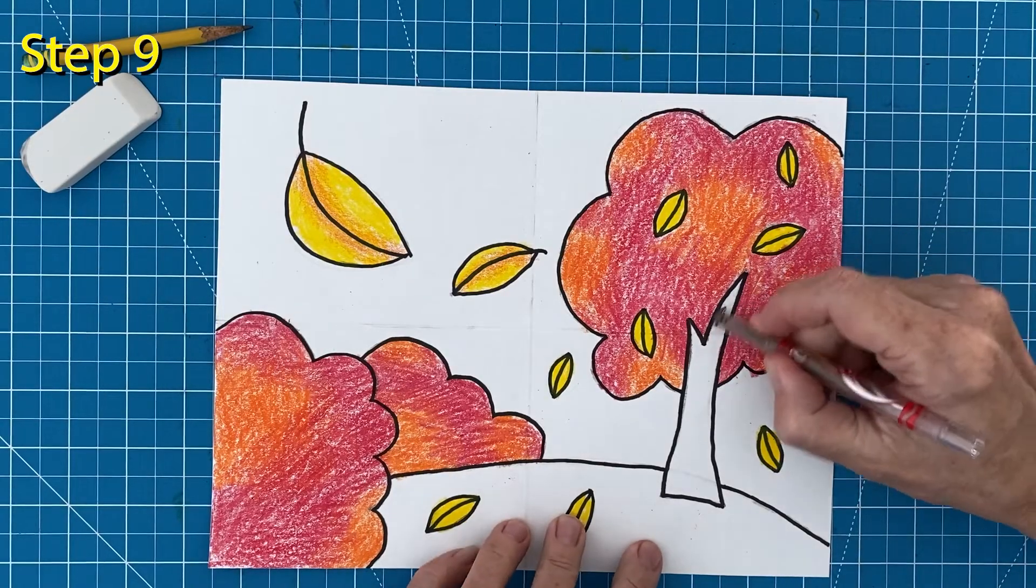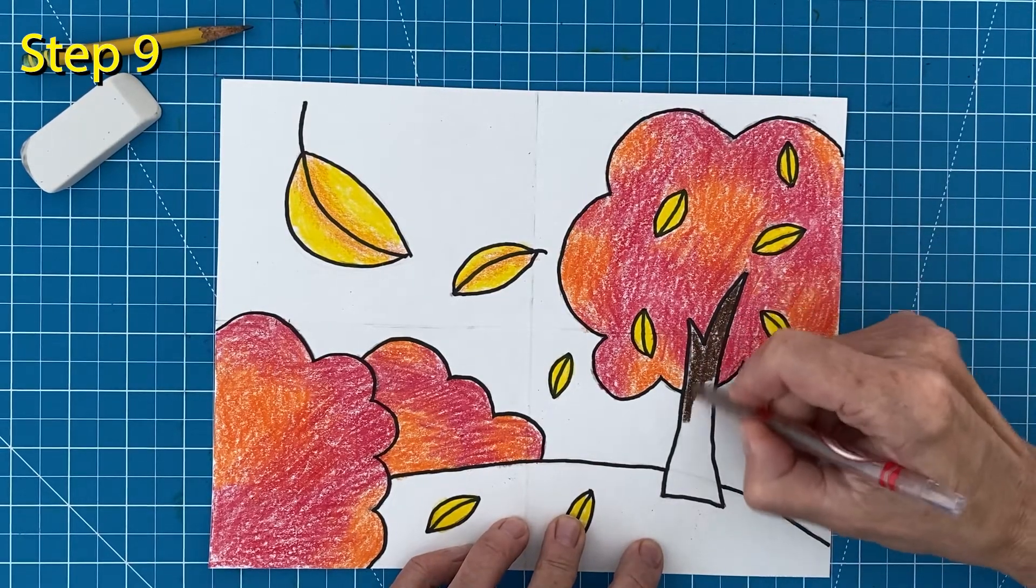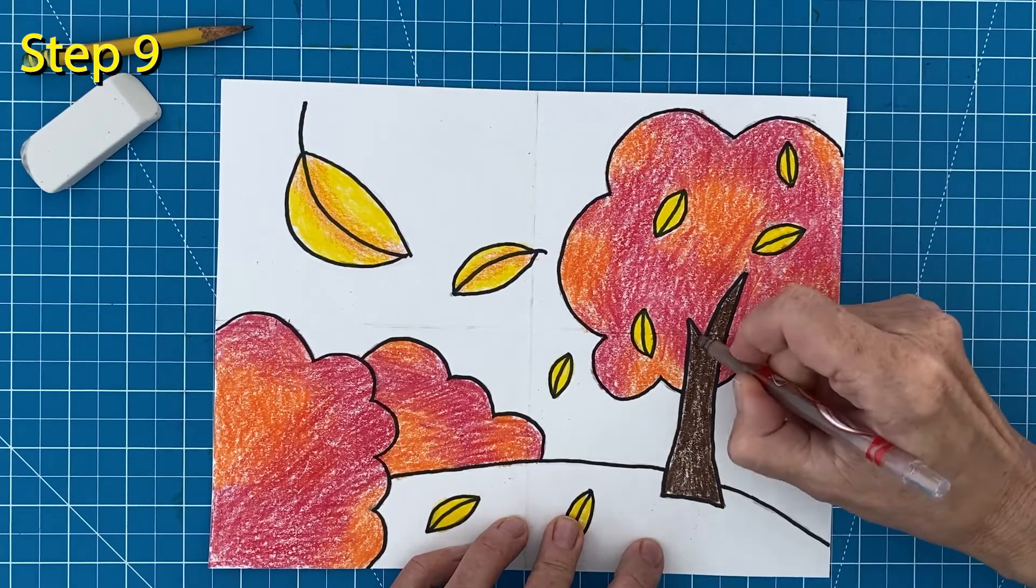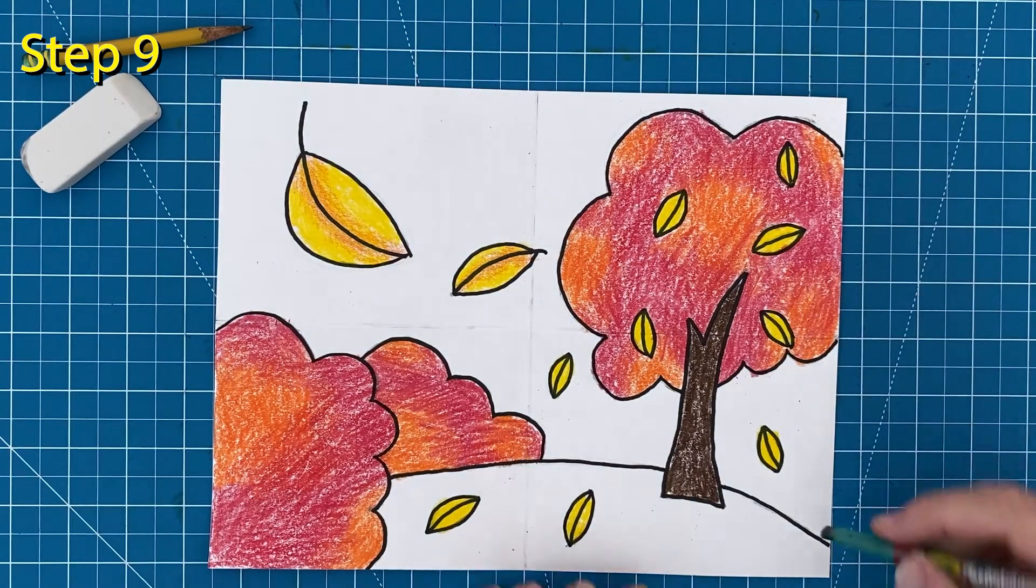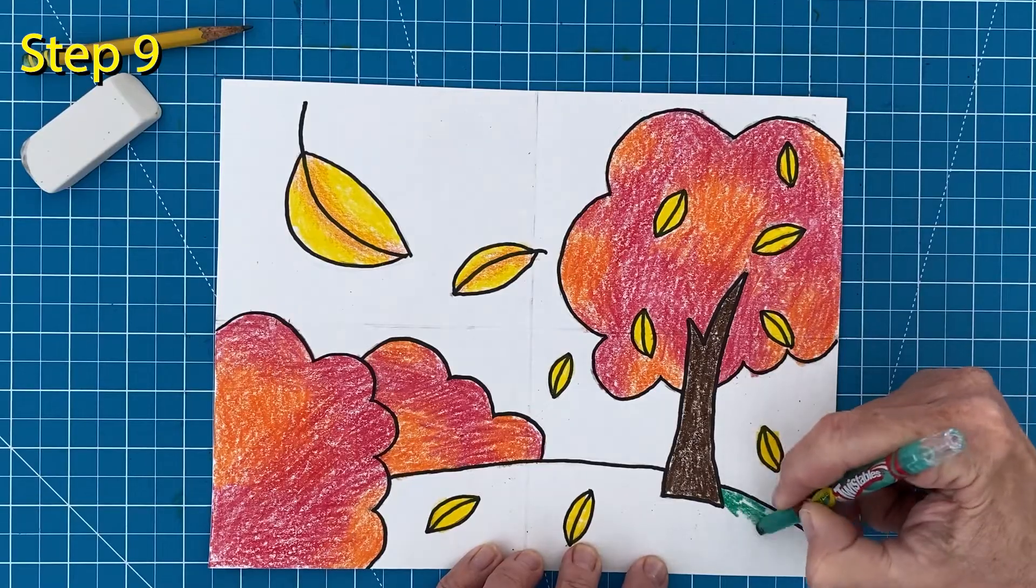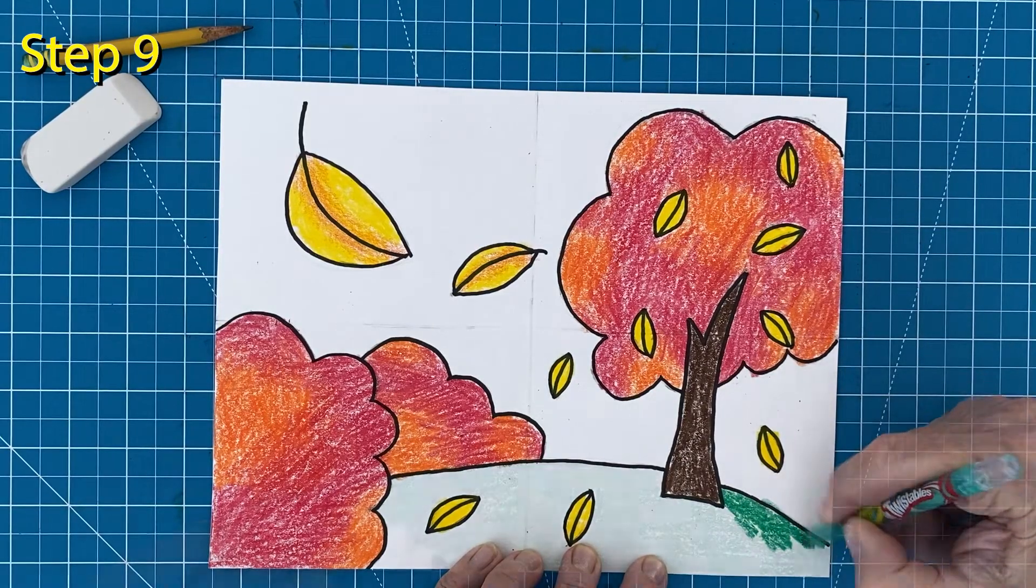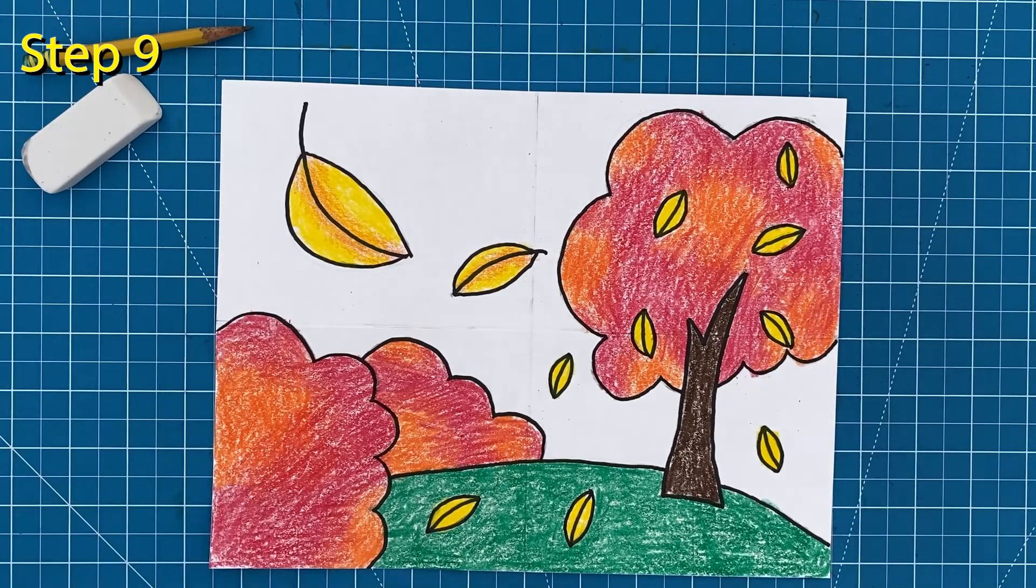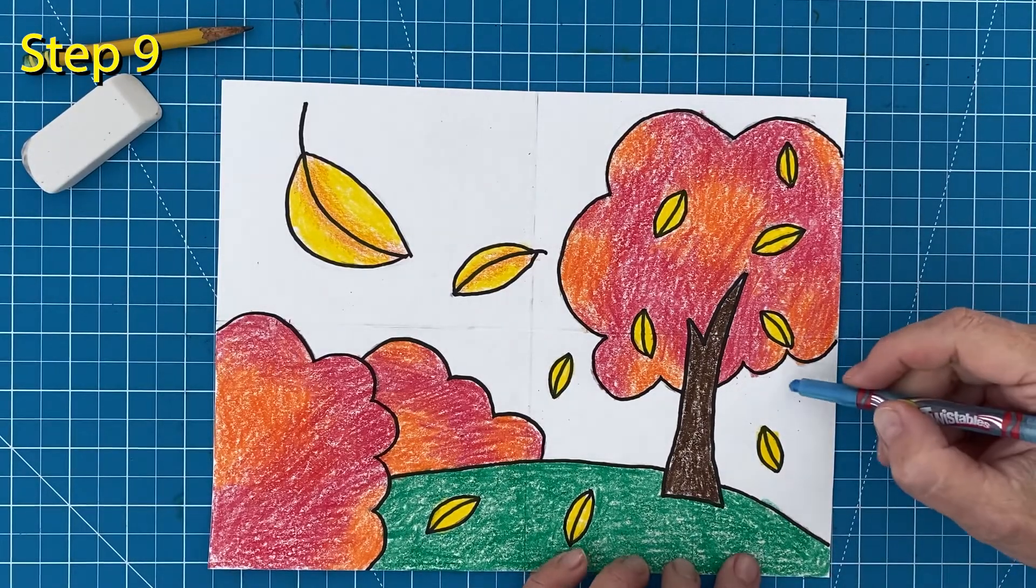Now it's time to color the tree trunk. I'm going to use a medium brown color. Now find a grassy green and start coloring in your hill. Press hard so those yellow leaves really stand out. And now it's time to color in the sky.